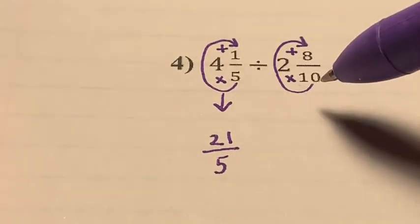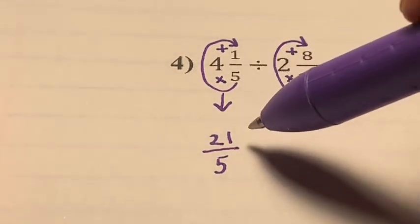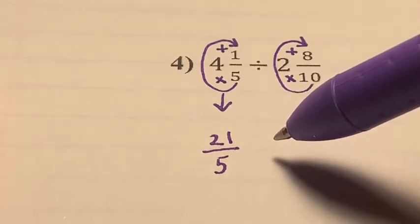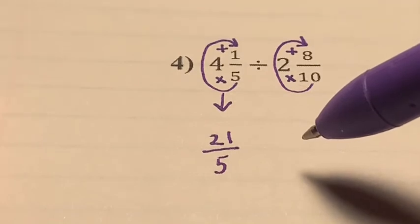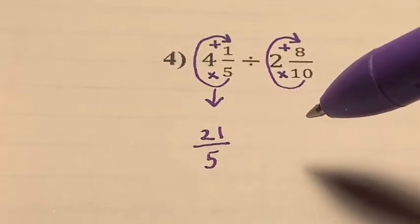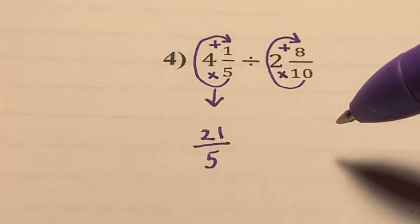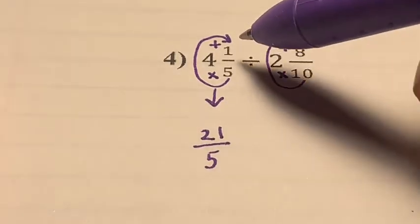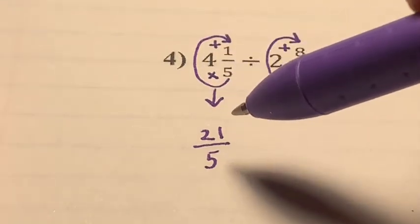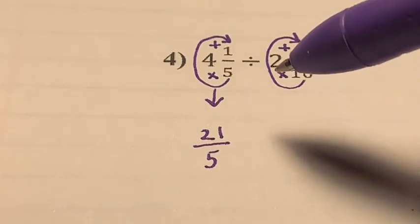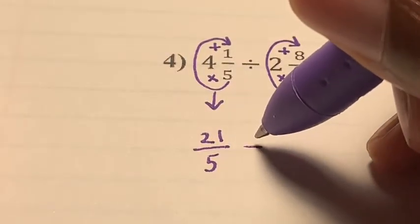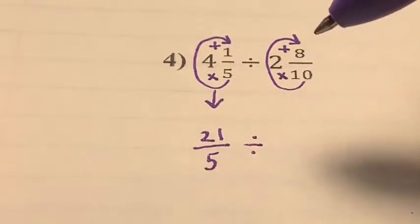Do not do the keep, change, flip process yet. Students make mistakes in math because they rush. Our only purpose right now is to convert each mixed number into an improper fraction. So let's keep the division sign the same — do not change it to a multiplication sign yet.